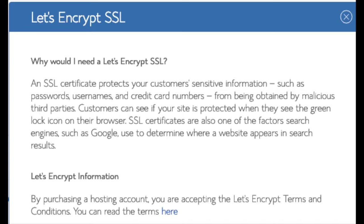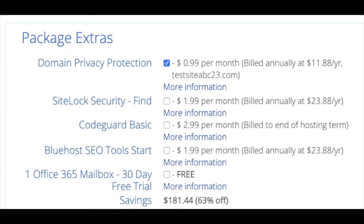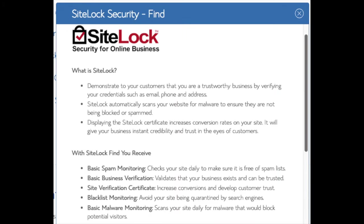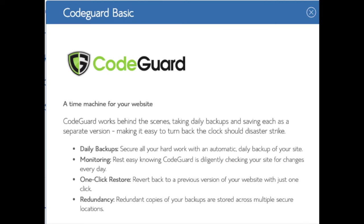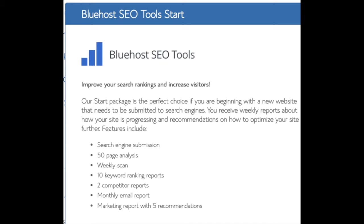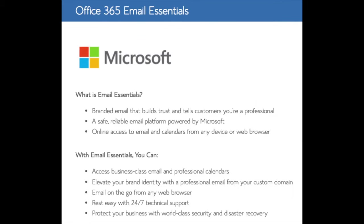The SSL feature is a free SSL certificate that makes your site secure with the green bar and HTTPS. Domain privacy is an add-on I highly recommend — it will prevent telemarketers from getting hold of your personal contact information. SiteLock Security protects your WordPress site from hackers, but I'd uncheck this as there are really good free alternatives. CodeGuard creates daily backups and allows you to restore your site with a click. There are free alternatives that work just as well. SEO Tools Start can be left unselected — submitting your site to search engines you can do for free. Office 365 Email Essentials is Microsoft Outlook — keep it selected if you'd like, but it's not necessary. All these add-ons are completely optional.